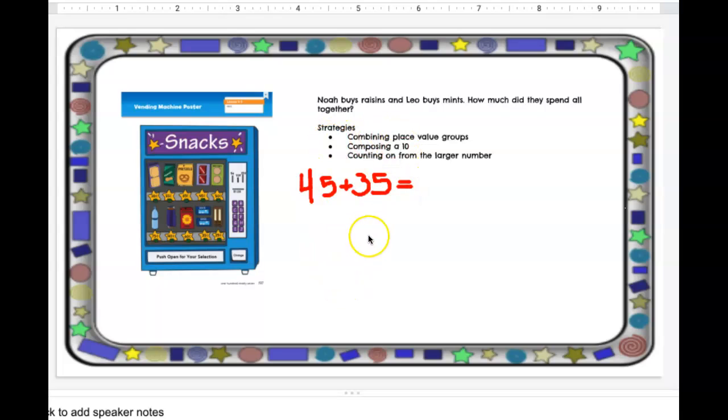So the first strategy I'm going to talk to you about is combining place value groups. And that just means that we are thinking about the money. So first thing I want to do is add my dimes together. We know that that's our tens place. So we have four dimes and three dimes. Four plus three, that gives us seven dimes.